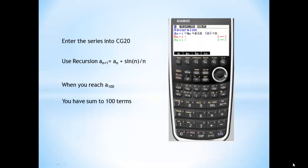Next, we enter the series into CG20. We are going to use a recursion A sub n plus 1 equals A sub n plus sin n over n. So when you reach the term A sub 100, you have sum to 100 terms.